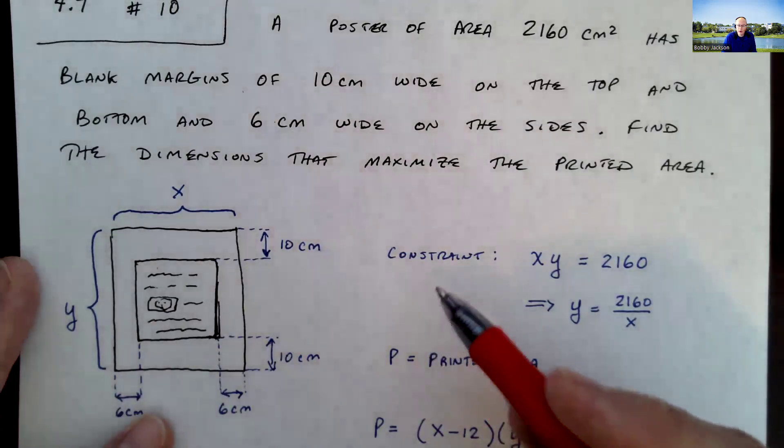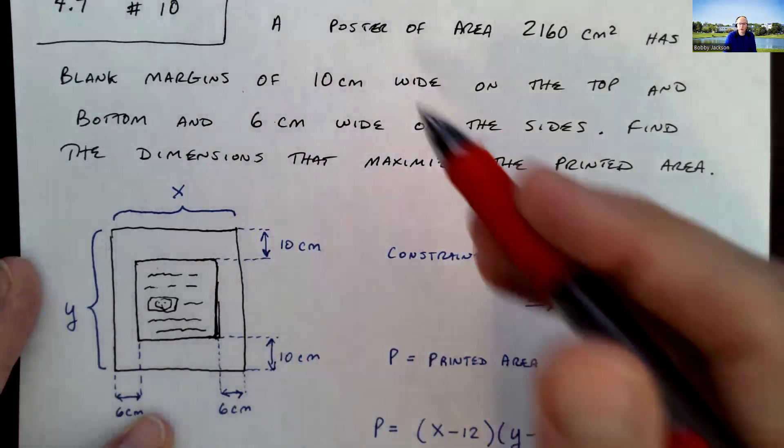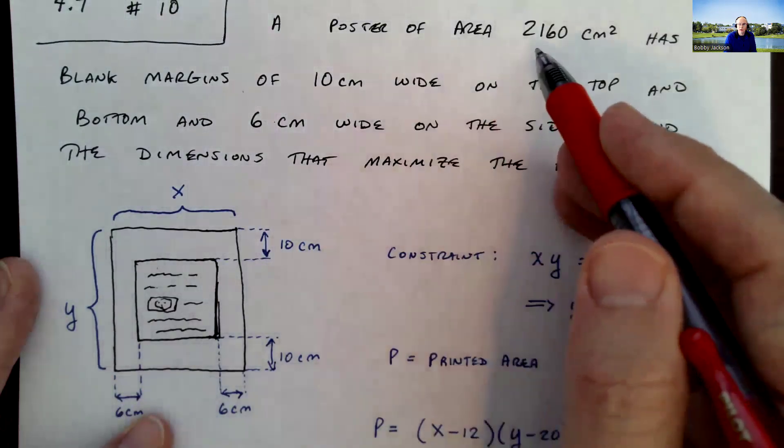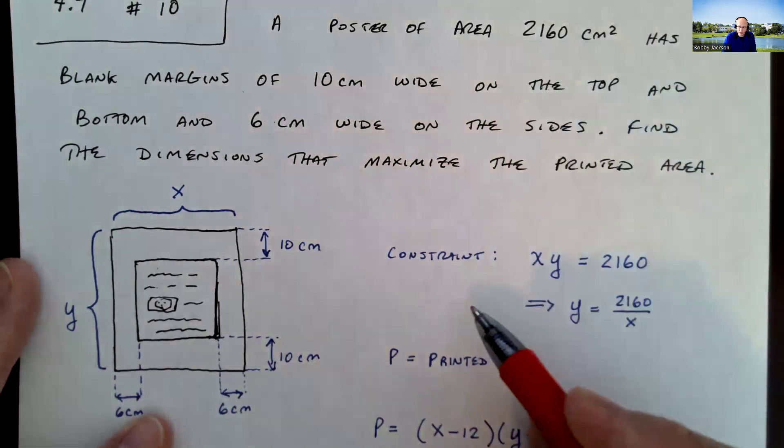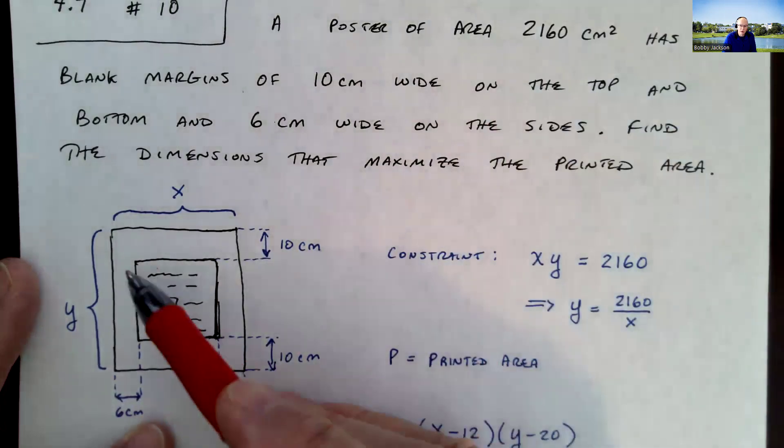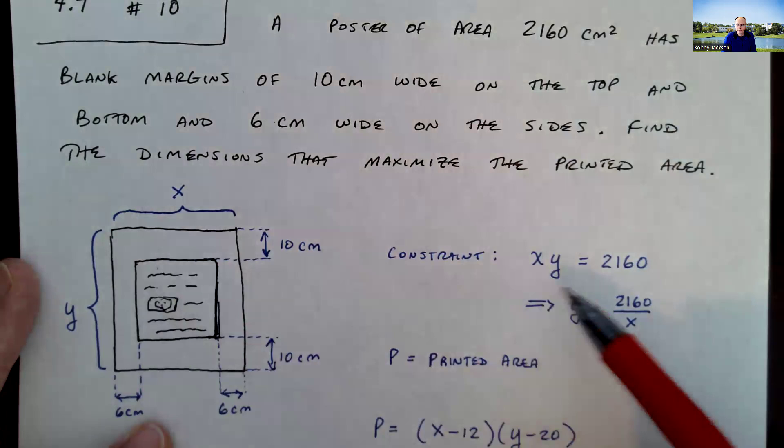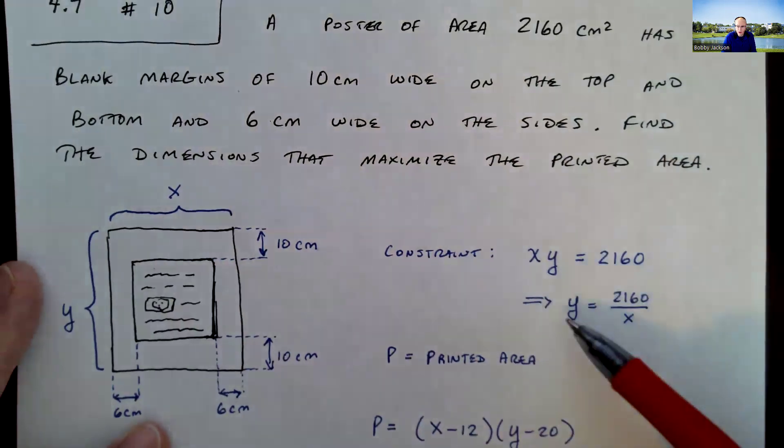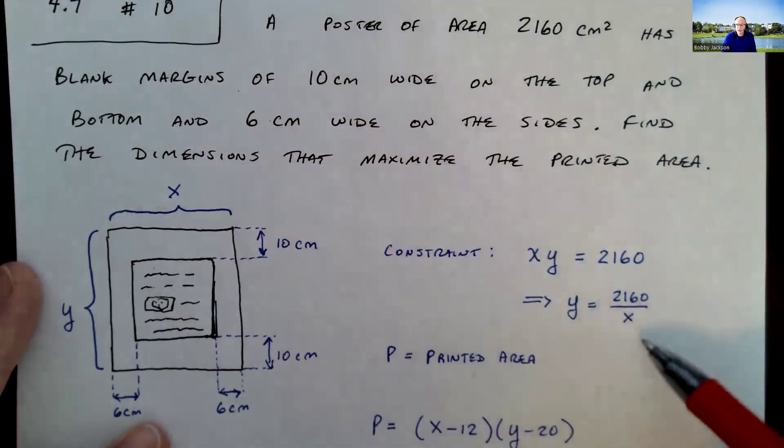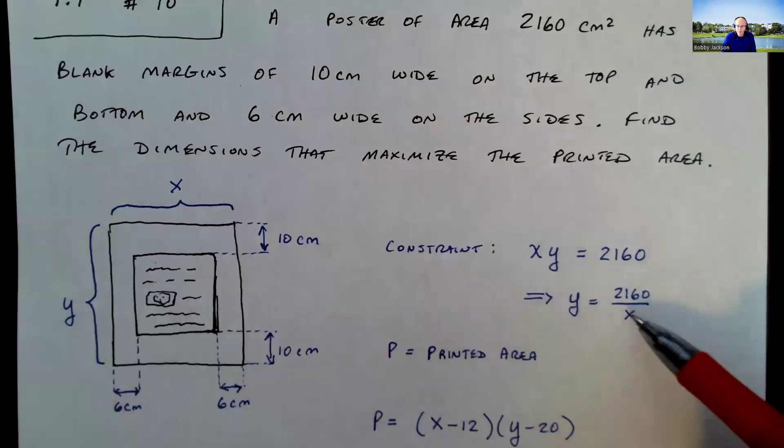All right. So first of all, we have a constraint. And that is that the total area of the poster is 2,160 square centimeters. So the area of the whole poster is x times y. So we have this relationship. And of course, I can solve, for instance, y is that area divided by x.